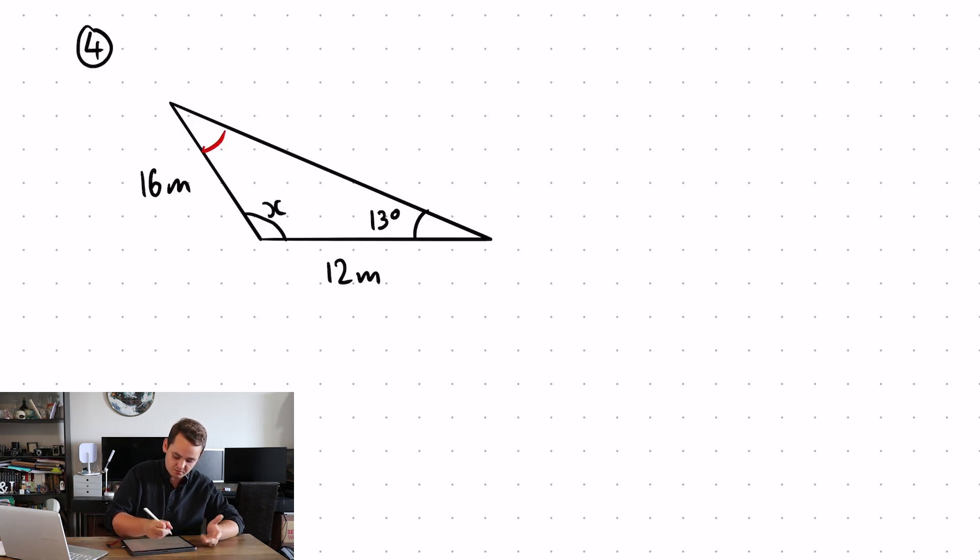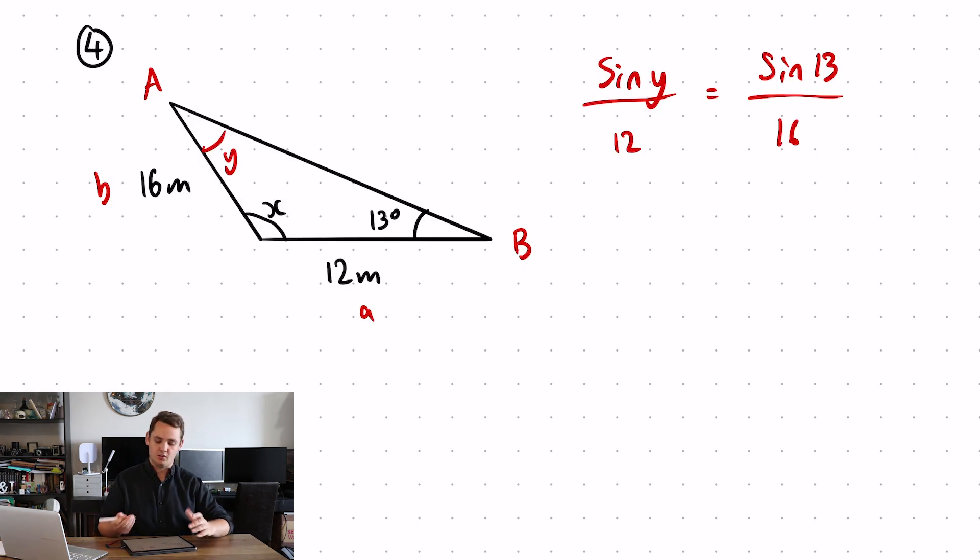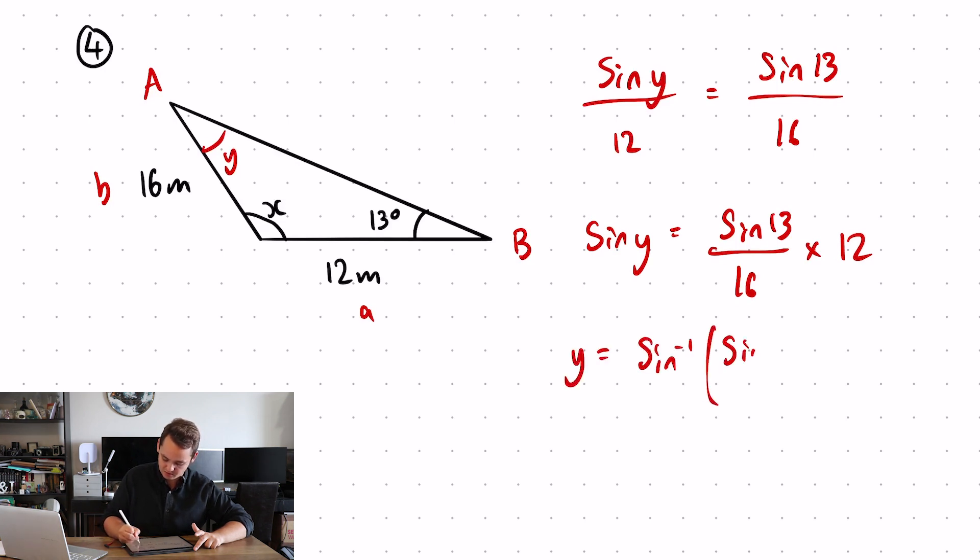So let's call this Y for now. I want to find out why. So that is my unknown angle. This side opposite, lowercase a. This is my other angle. So sine Y over 12 is equal to sine 13 over 16. Rearrange to find Y. So sine Y is sine 13 over 16 multiplied by 12. Get Y by itself. I'm going to do inverse sine. So inverse sine, sine 13 over 16 times 12 to give me an angle of Y as 9.7 degrees.